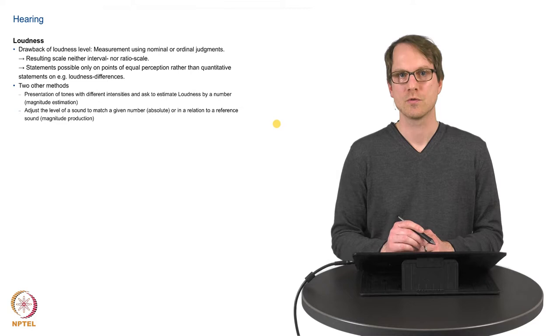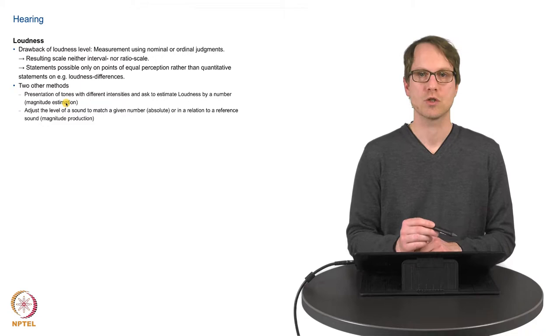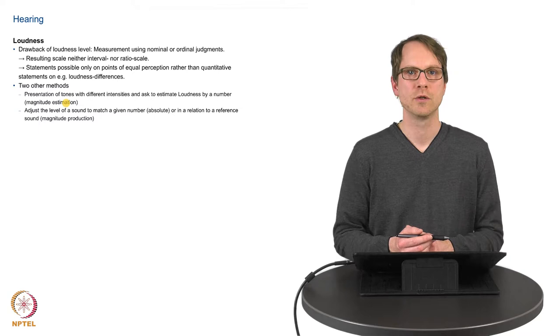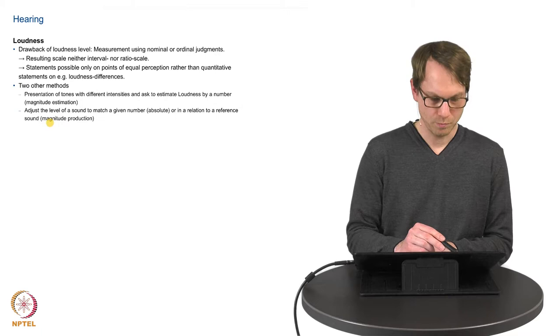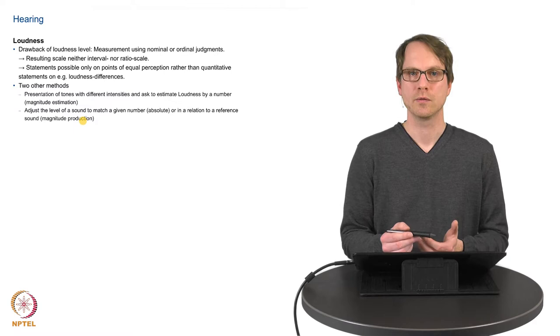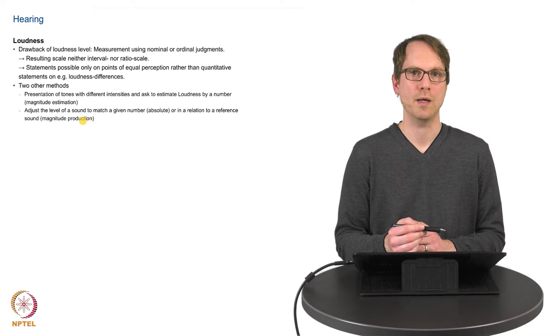And therefore we have different methods to find a scale of loudness. There are two methods to do that. The so called magnitude estimation works by presenting tones with different intensity and we let people describe how much they differ, for example on a given scale would be a 6 or a 7 or saying this is double the loudness of a reference tone. And the same works vice versa. We have the magnitude production where we give for example two different tones, a reference tone and another one, and we ask people to adjust the intensity or the loudness of the other tones so it fits a given statement concerning the reference tone, for example double the loudness.